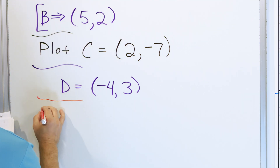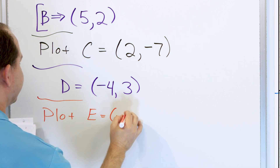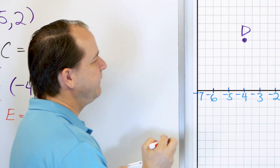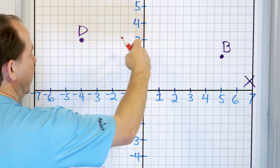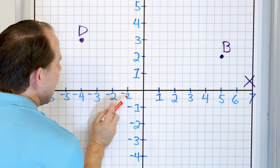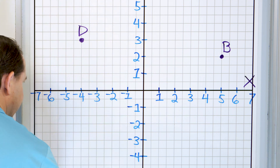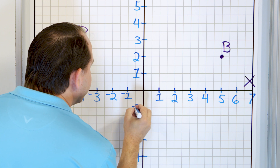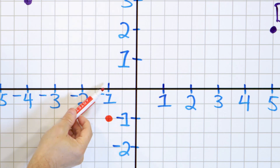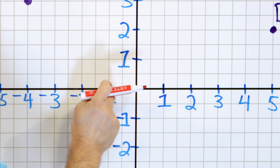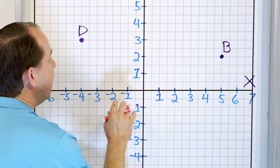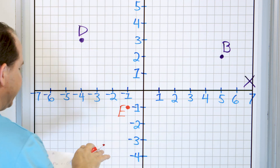Let's plot point E at negative one comma negative one. The x value is negative one and the y value is negative one. Starting from the origin — which is the center where the x and y axes cross — negative one for x means we go one unit to the left, and negative one for y means we go one unit down. So point E is right here, very close in distance to the origin.